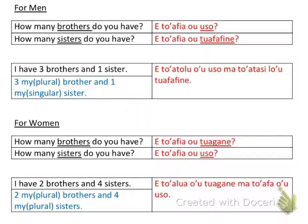The next thing we're going to learn is how to say 'how many sisters do you have.' Again this uses 'a toa fia' to indicate there's an amount of people involved. How many your sisters is basically what this is saying: 'a toa fia o tua fafine.'